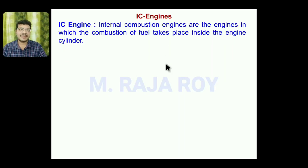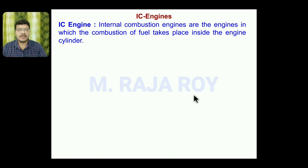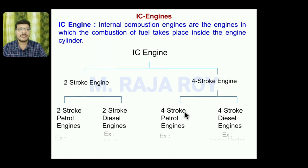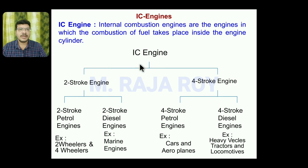Dear students and friends. In this video, I am going to explain about IC engines. IC engines are the engines in which the combustion of the fuel takes place inside the cylinder only. We have external combustion engines also. The best example for an external combustion engine is the steam engine. These IC engines are classified into two types: two-stroke engines and four-stroke engines.